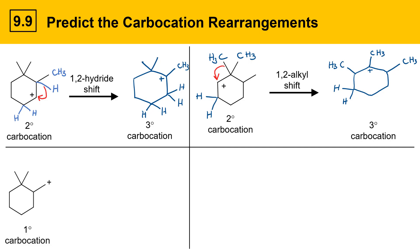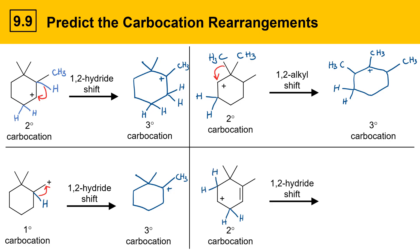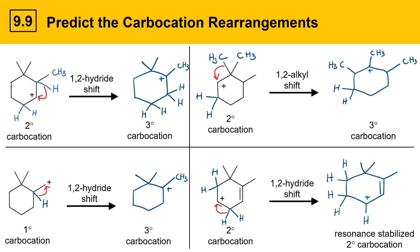Here's an example with a primary carbocation. On the neighboring carbon there's a hydrogen, and that hydrogen could move over in a 1,2-hydride shift, resulting in a more stable tertiary carbocation. Here's another example with a secondary carbocation. Drawing in the neighboring groups and looking at what can move, a 1,2-hydride shift could occur with one of the lower hydrogens moving, because that gives a new carbocation which, although it's still secondary, is resonance stabilized and significantly more stable.